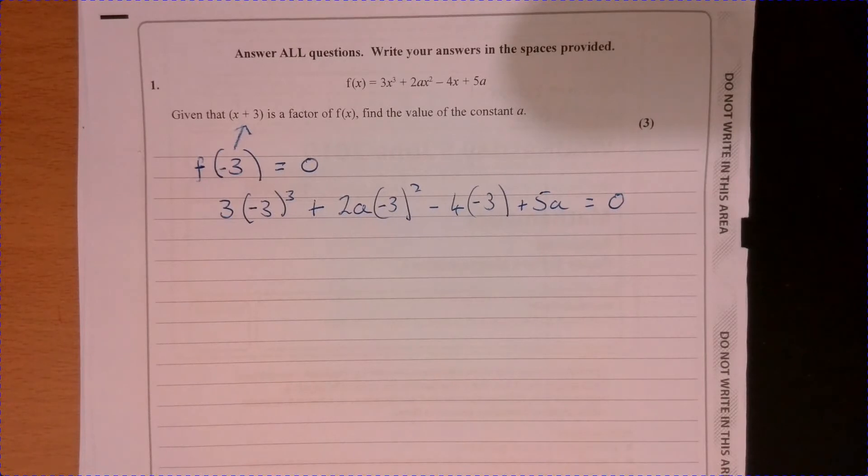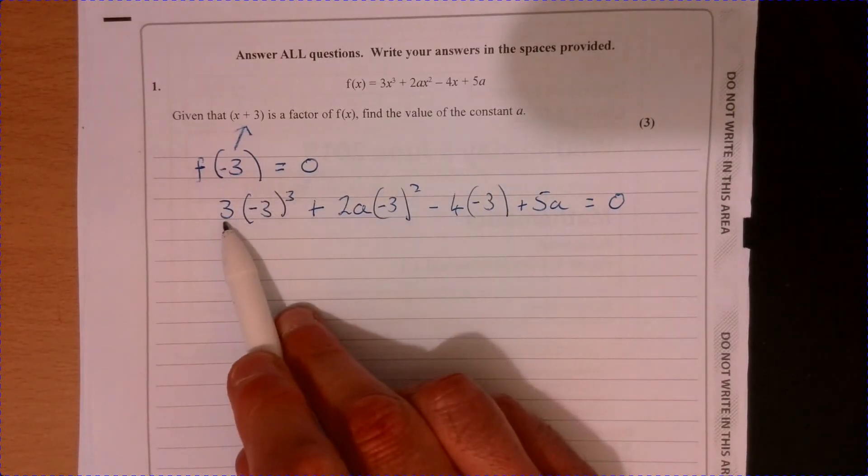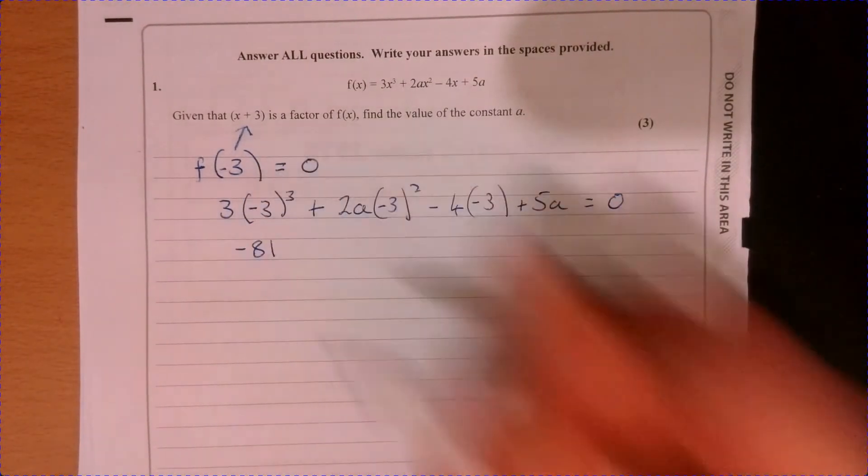OK, do the obvious stuff. So if we look at the beginning, that's going to be minus 27 times 3. So we're going to have minus 81.